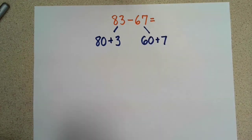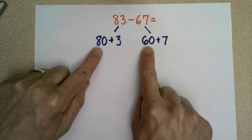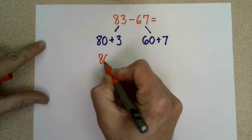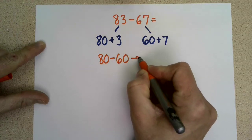So in addition strategy, what we would do is take our tens and add them together. Well, we have 80 and 60. Can we subtract those? We can. Let's try that. So 80 minus 60 would be one part of our equation.